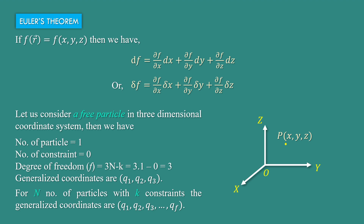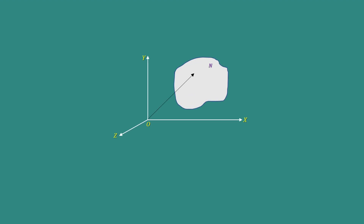For n number of particles with k constraints, the generalized coordinates are q1, q2, q3 up to qf. If we consider a system of n particles and ri be the position vector of the i-th particle, then displacement of the i-th particle is delta ri and ri is equal to ri of q1, q2 up to qf, t.